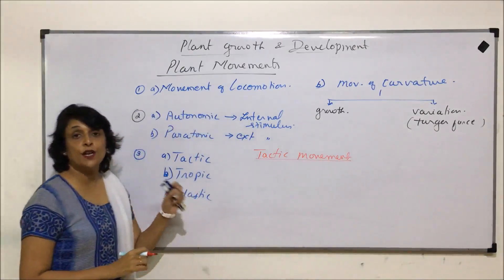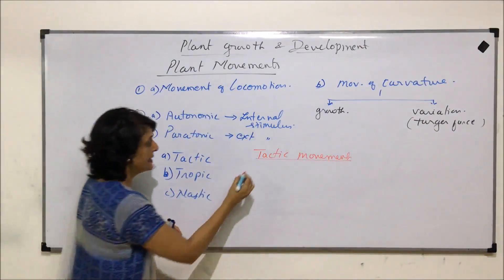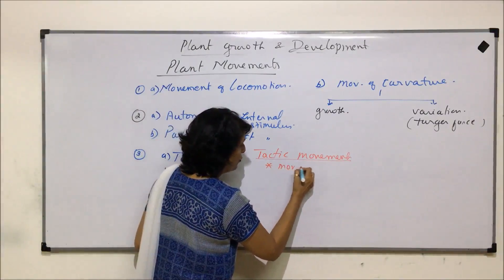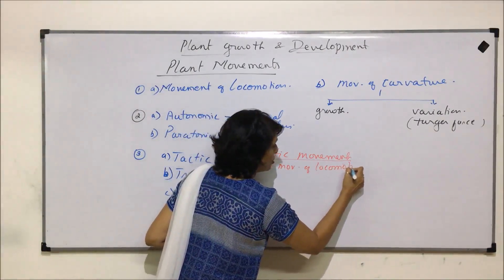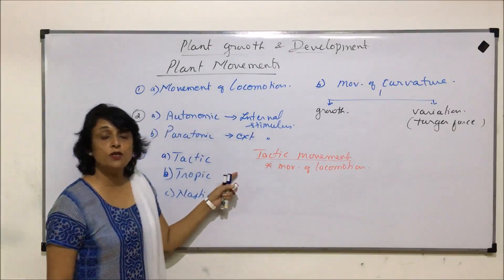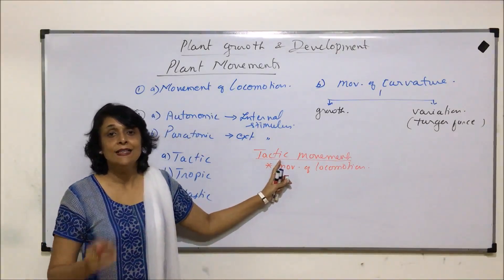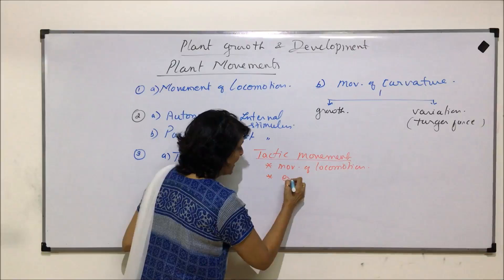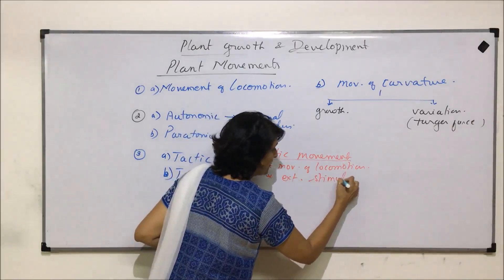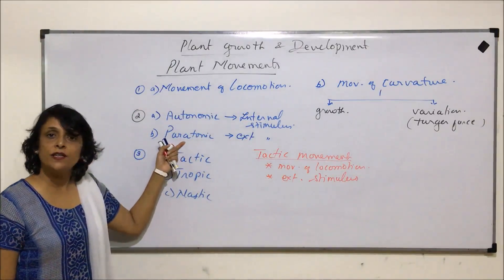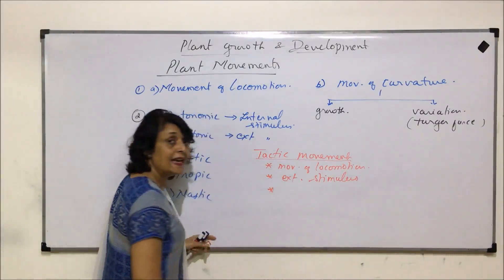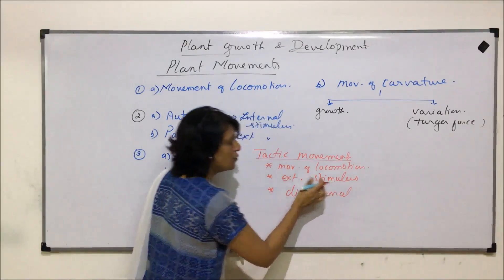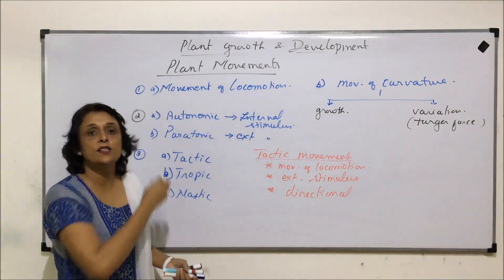Tactic movements are movements of locomotion. That means the structure showing this movement must have locomotive structures. Second, it is due to an external stimulus, making it a paratonic type of movement. Third, it is directional — it responds to the direction of the stimulus.